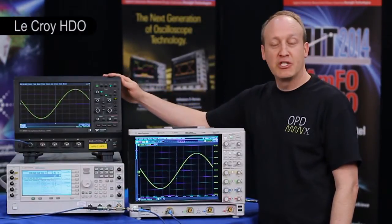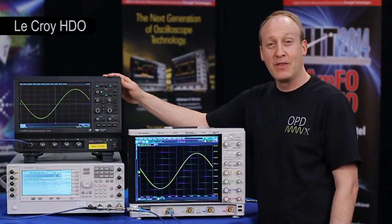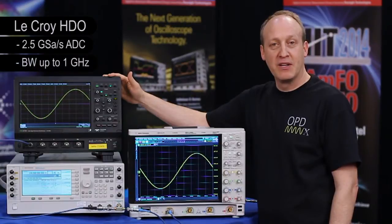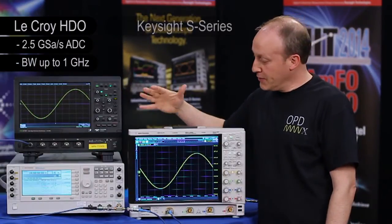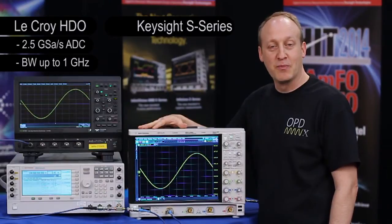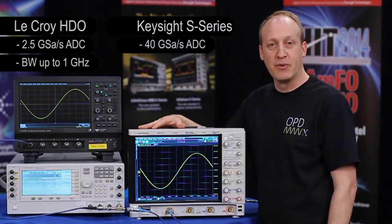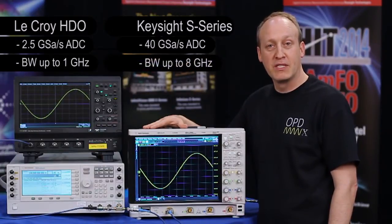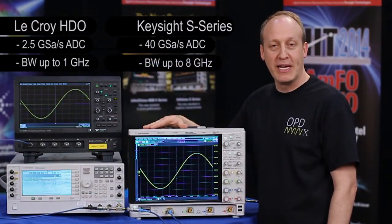One of them is the LeCroix HDO, which uses an off-the-shelf A-to-D converter that runs at 2.5 gigasamples and has bandwidths of up to 1 gigahertz. The other is Agilent's S-series oscilloscope with an A-to-D converter that runs internally at 40 gigasamples and can be deployed at two channels times 20 gigasamples or four channels times 10 gigasamples, and the scope itself has bandwidths from 500 megahertz up to 8 gigahertz.